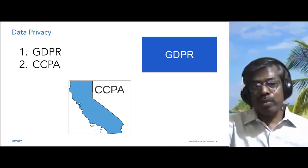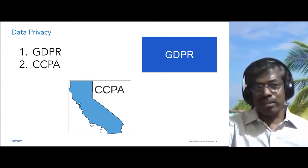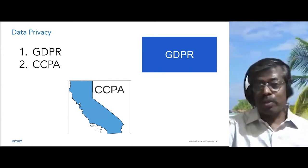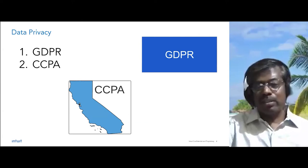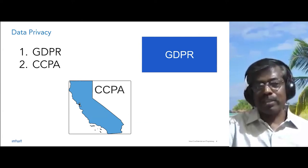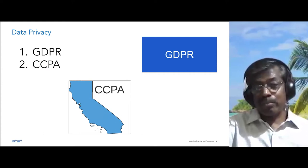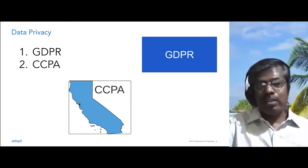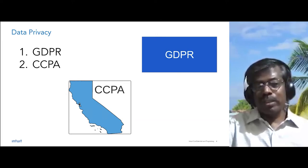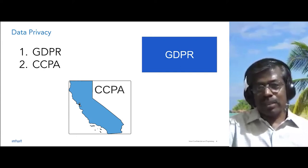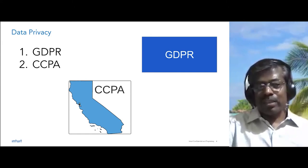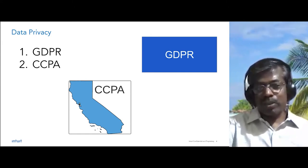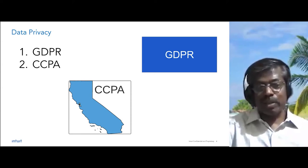These are the two most important regulations that started this journey. Number one is GDPR, the General Data Protection Regulation, which was introduced by European countries and provides data privacy rights to European customers. Similarly, a law called CCPA was introduced in California providing increased rights to Californian customers. Intuit, being one of the stewards of regulations, decided to support these across all regions where we operate.